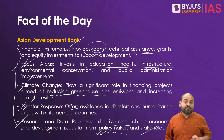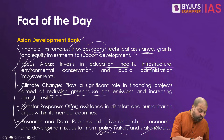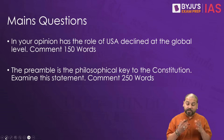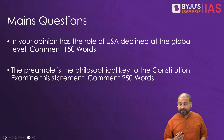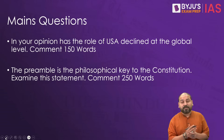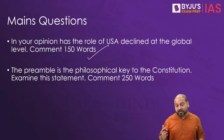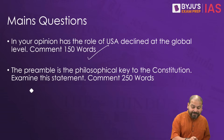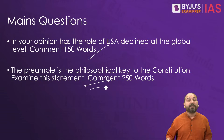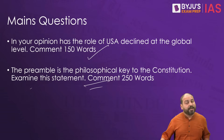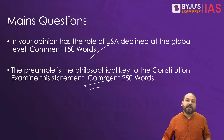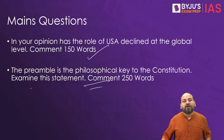In the morning CNA session, two main questions were missed, so I'm bringing those here. Number one: in your opinion, has the role of the USA declined at the global level? Comment in 150 words. Number two: the preamble is the philosophical key to the constitution — examine this statement in 250 words. If you like these initiatives, do like, subscribe and comment. We shall meet again tomorrow in another session. Thank you. Goodbye.